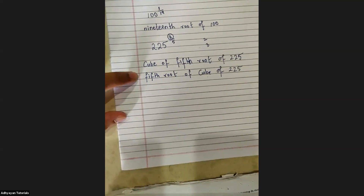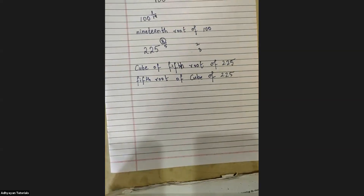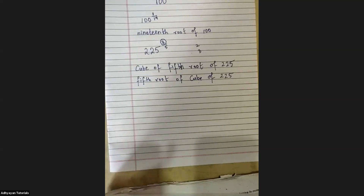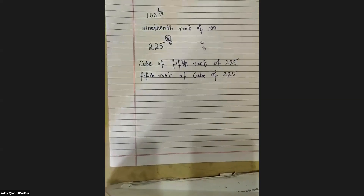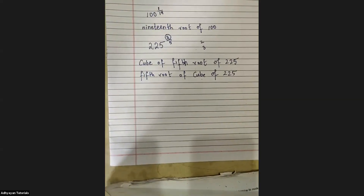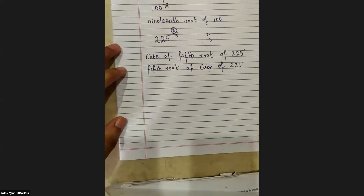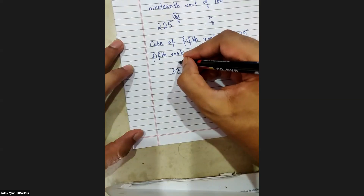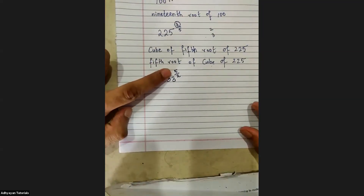They might even use the word root for order. Now, what if cube is not there? Let's take 33 raised to five upon two. Up in the power is five and two — we cannot use the word square or cube for the power of five.